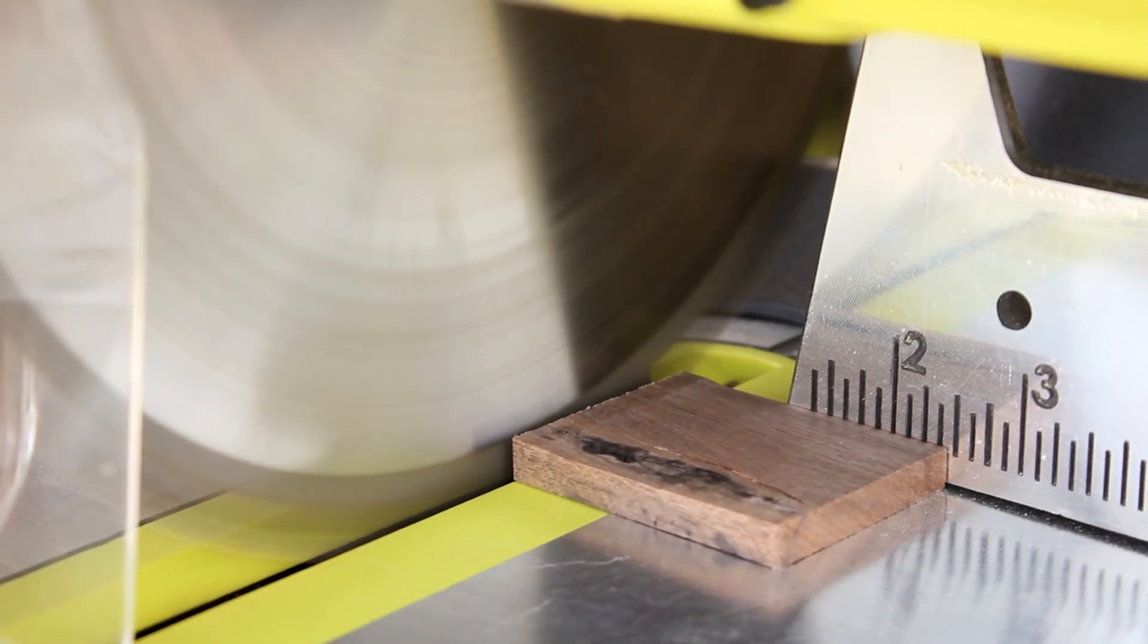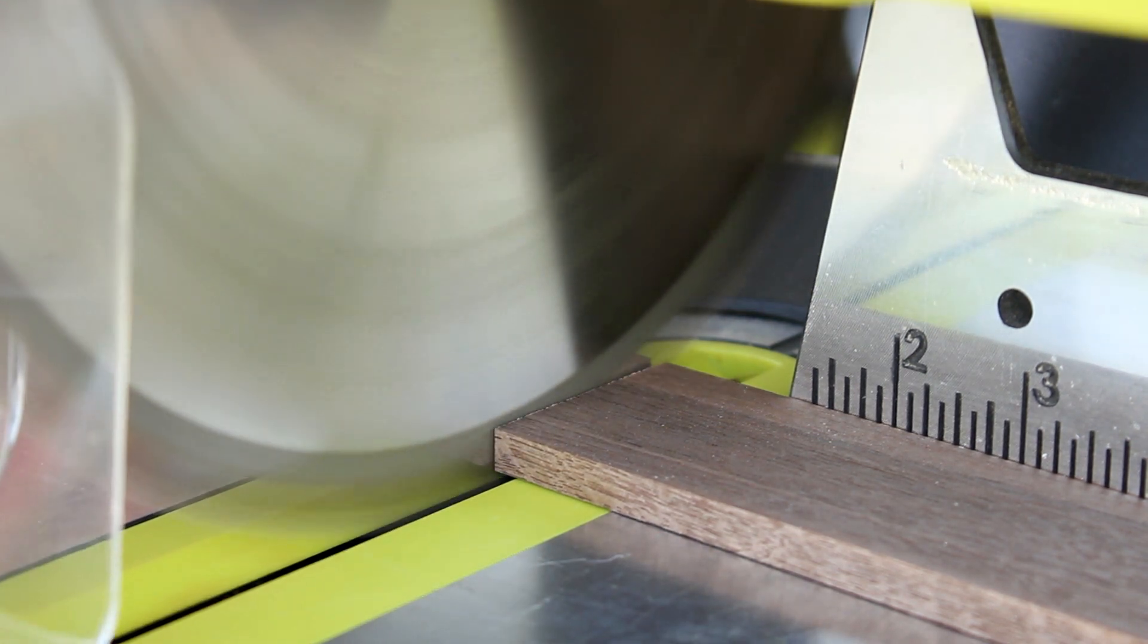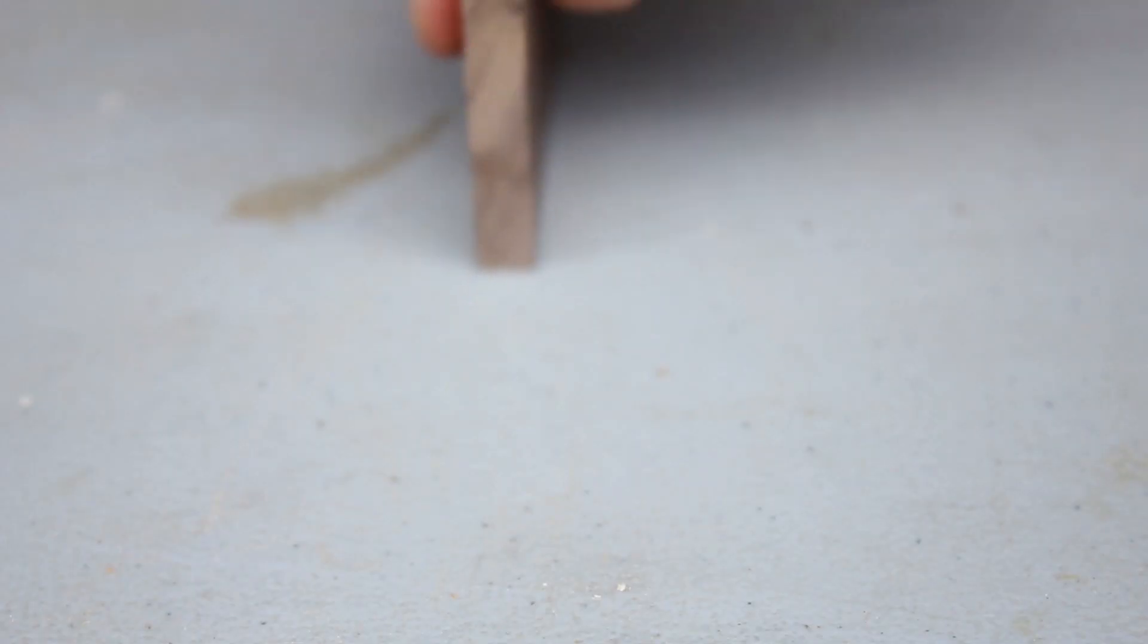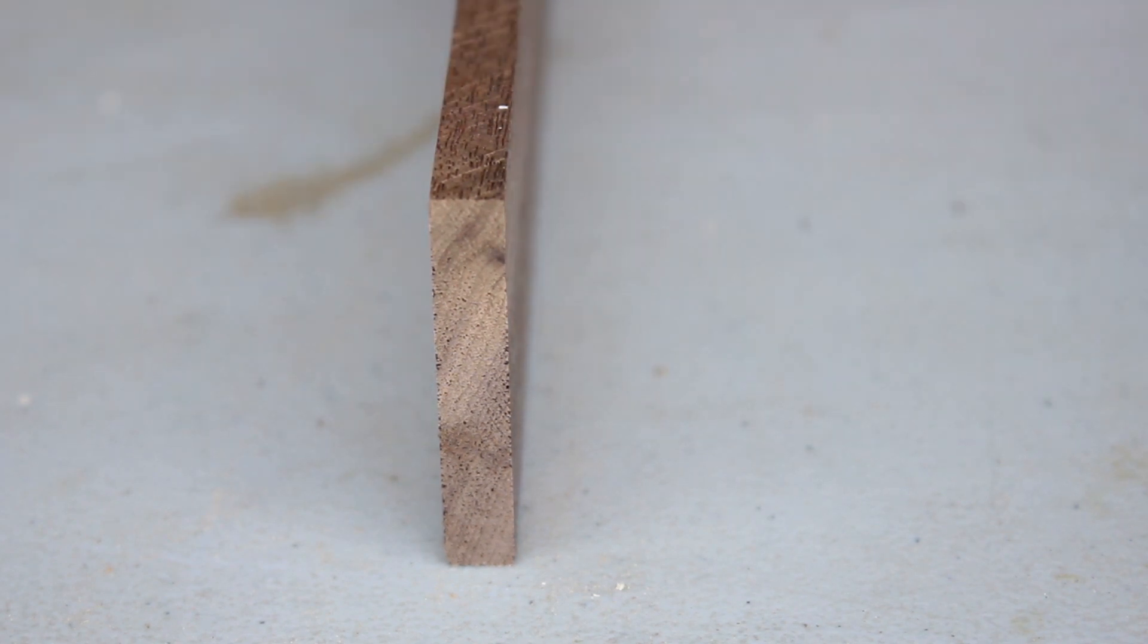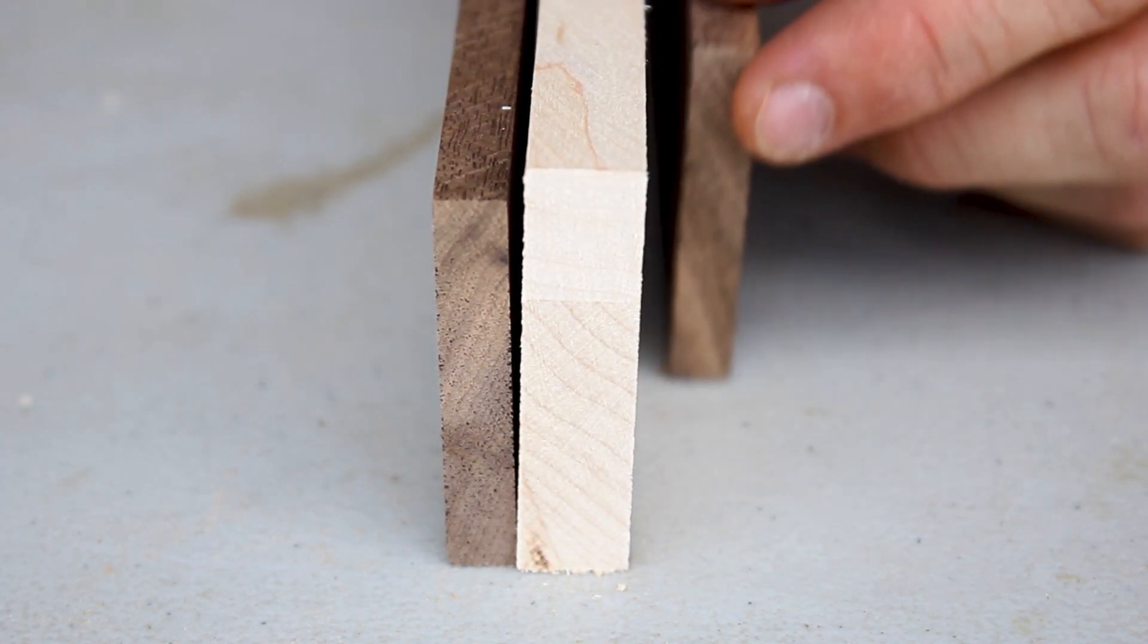Then I trimmed off the excess pieces and saved those for later, as well as cut the walnut strip in half. And here's how the design is going to look with the maple serving as a centerpiece to contrast the outside walnut strips.